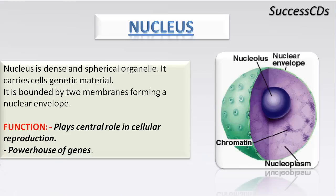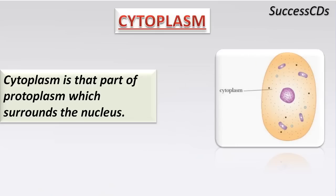The next and most important component of the cell is the nucleus. The nucleus is very dense and is generally spherical in shape. It carries all the genetic material that is passed from a parent to future generations. It is bounded by two membranes forming a nuclear envelope, which contains a nuclear membrane and nuclear pores. The nucleus plays a central role in cellular reproduction — one cell dividing into two — and is the powerhouse of genes.